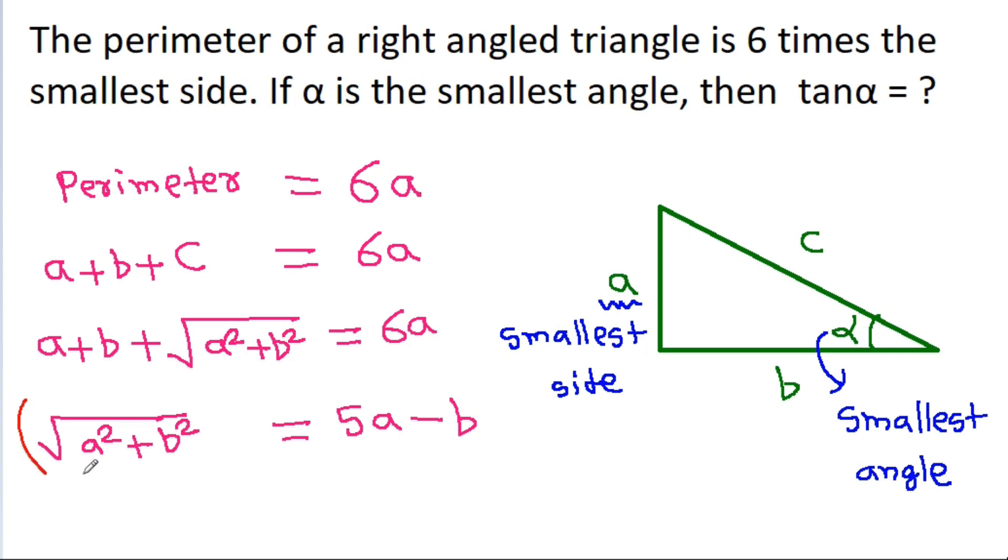Squaring both sides: (√(a² + b²))² = (5a - b)². This gives us a² + b² = 25a² + b² - 10ab.